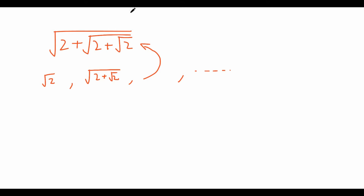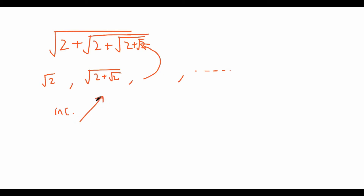We might first want to consider whether it goes to infinity or to some fixed value. In fact, I can show it must converge to a fixed value. First, we notice that this sequence is increasing, because if we take the third term and obtain the fourth term by adding a square root of 2 inside the last square root, adding something positive makes the entire expression increase. So this is an increasing sequence. To prove it converges, we just need to prove it's bounded from above — an increasing sequence that's bounded above must converge to some value.